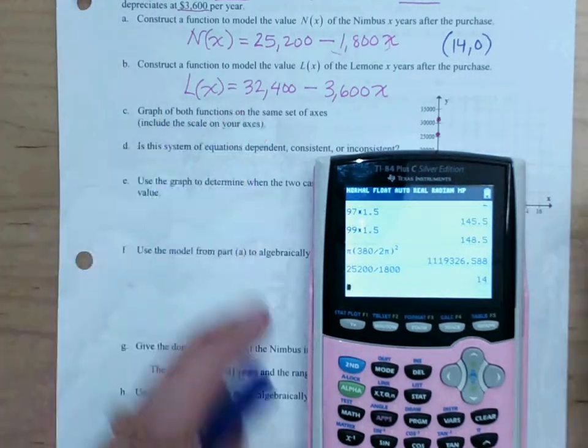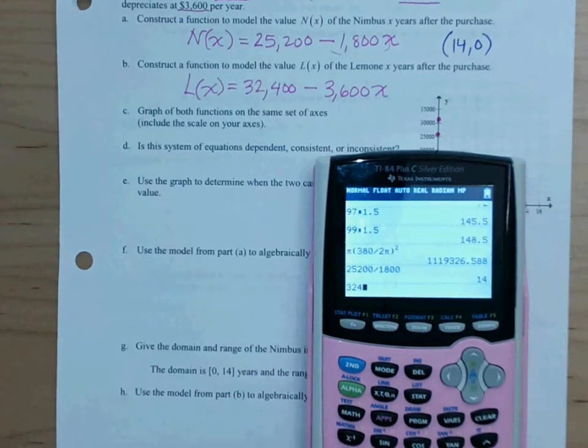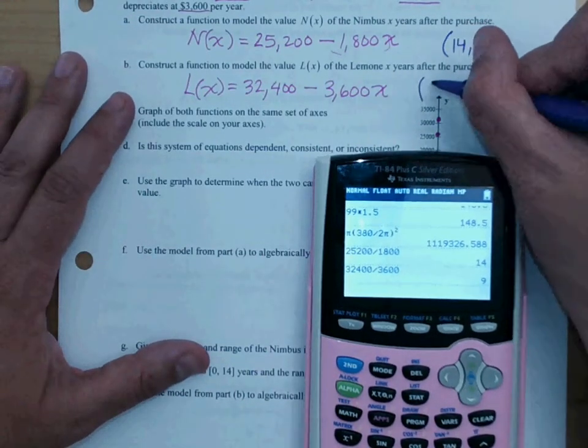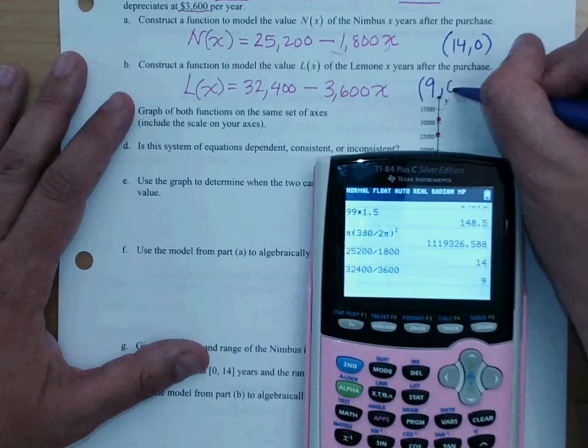We're going to do the same thing here. $32,400 divided by the depreciation, and we get, this one will have, in nine years, it will have a value of zero.